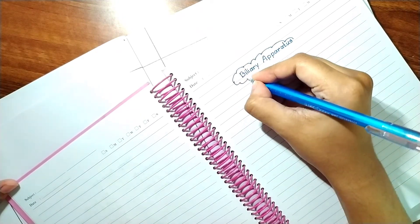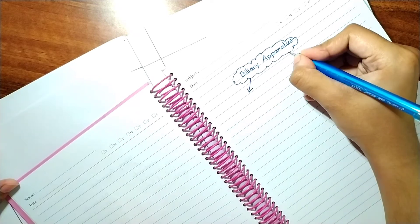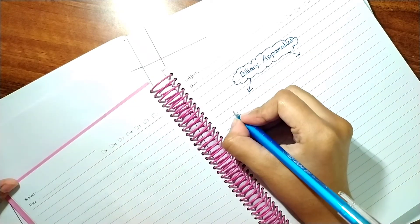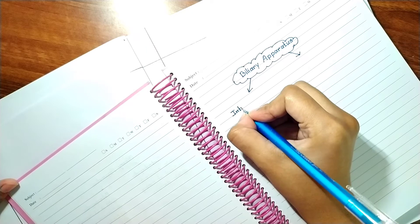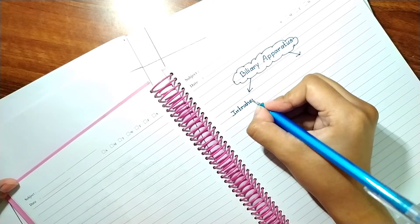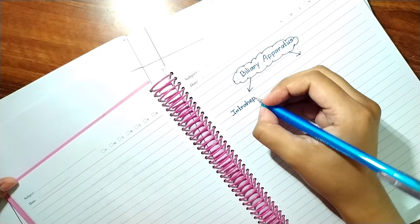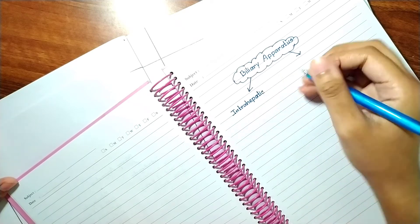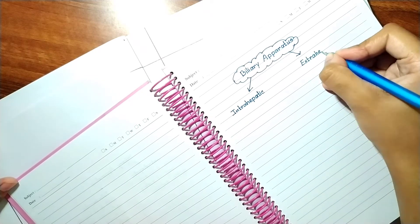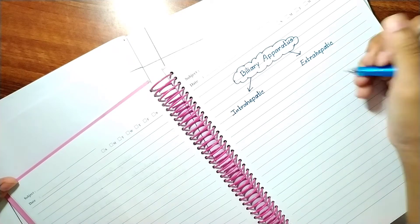Let's start from the biliary apparatus. There are two parts: intrahepatic biliary apparatus and extrahepatic biliary apparatus, through which hepatic bile and gallbladder bile are conveyed into the second part of duodenum.